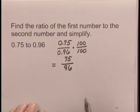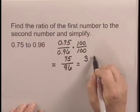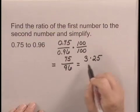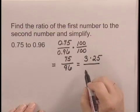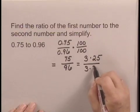And now we can simplify it by factoring. Factoring 75, we have 3 times 25. Factoring 96, we have 3 times 32.